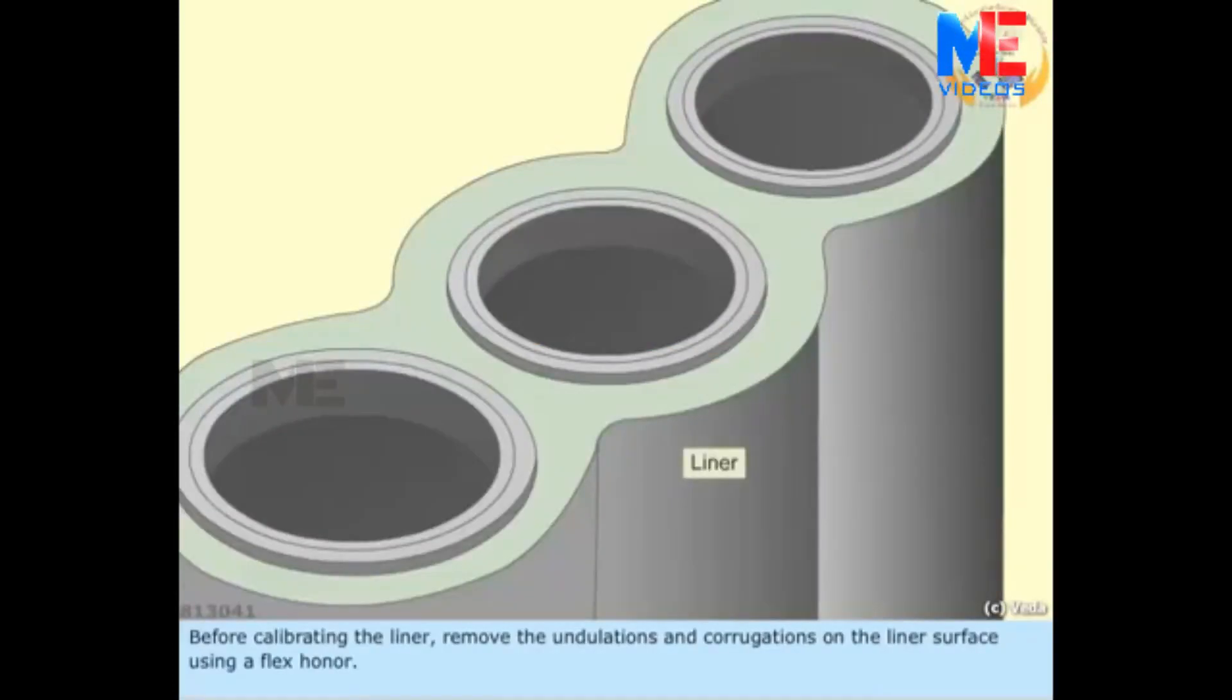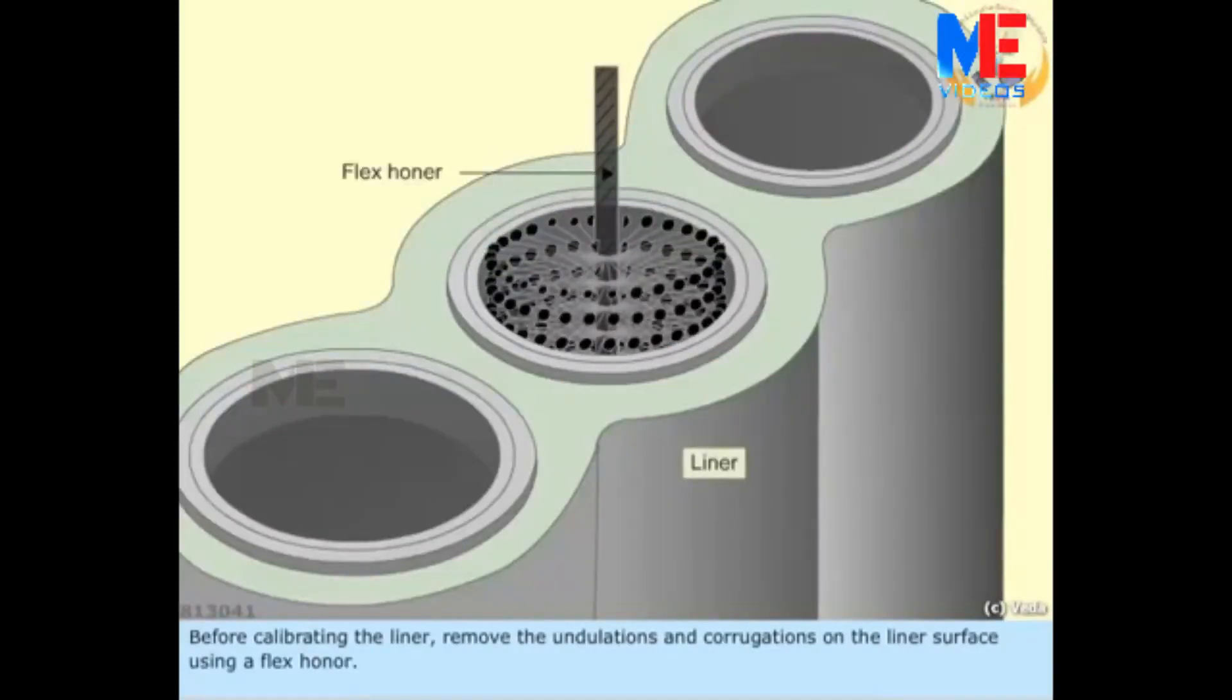Before calibrating the liner, remove the undulations and corrugations on the liner surface using a flex horner.